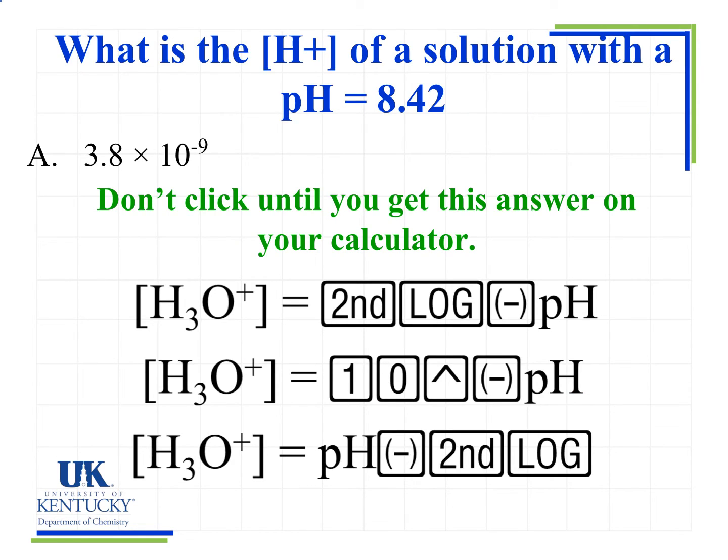Now another one for you to try. What is the H plus concentration of a solution with a pH equal to 8.42? Again, only one correct answer, so you know you're going to get it right, but you need to make sure you do this on your calculator first. We're trying to solve for the H plus, which is equivalent to the H3O plus. For the TI30X2S, you'll type second, log, the negative sign, and then the pH value, and then hit enter.